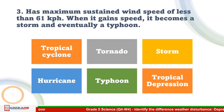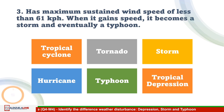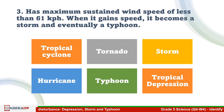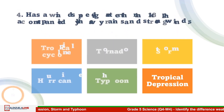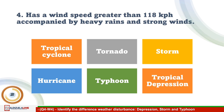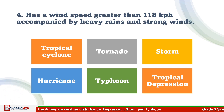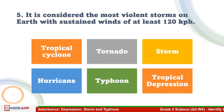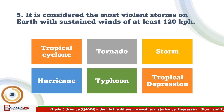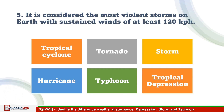Number 3: Has maximum sustained wind speed of less than 61 kilometers per hour; when it gains speed, it becomes a storm and eventually a typhoon — the answer is tropical depression. Number 4: Has a wind speed greater than 118 kilometers per hour, accompanied by heavy rains and strong winds — the answer is typhoon. Number 5: Considered the most violent storms on Earth with sustained winds of at least 120 kilometers per hour — the answer is hurricane.